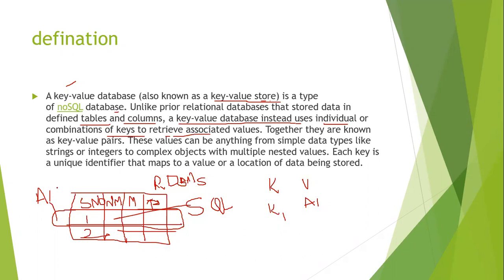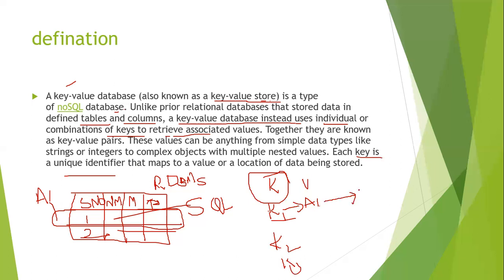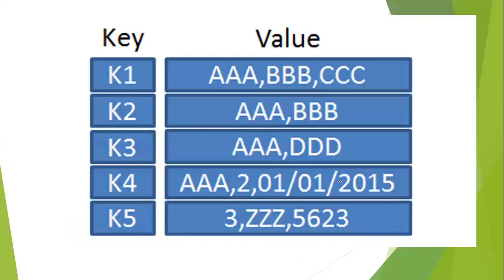We store the record in a particular memory location and write that address in a key-value pair. Values can be anything from simple data types like strings and integers to complex objects with multiple nested values. Each key is a unique identifier — so keys K1, K2, K3, K4 must all be unique and not repeated. Values are nothing but address locations in memory.